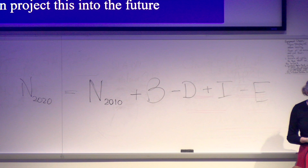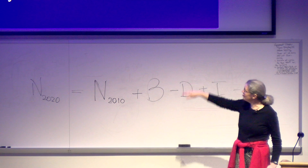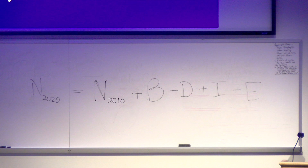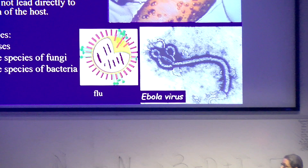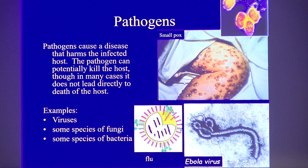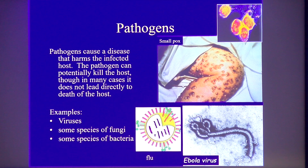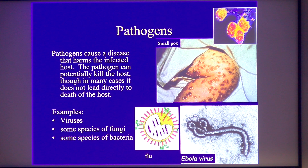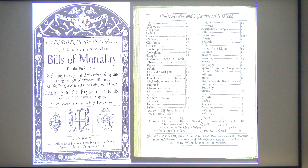Models can help us understand disease dynamics. Pathogens cause diseases and harm the infected host — the pathogen can potentially kill the host, though sometimes there's no direct death, like a mild cold. There are viruses, some fungi, and lots of bacteria. Examples shown include smallpox, which we luckily don't have anymore, Ebola virus, and flu virus.